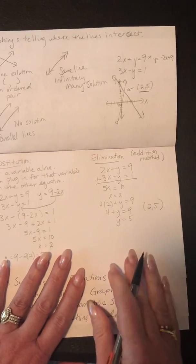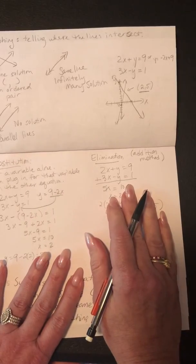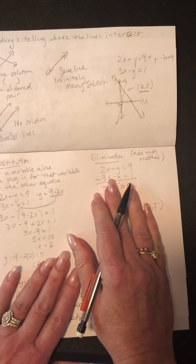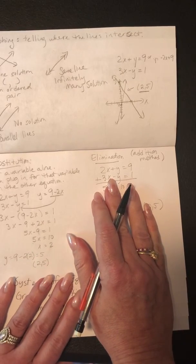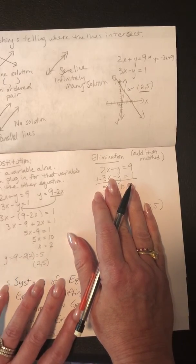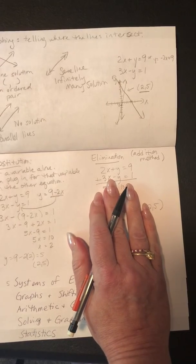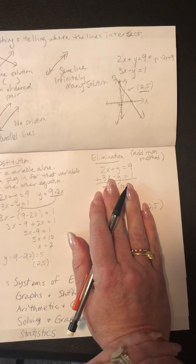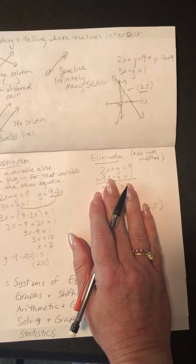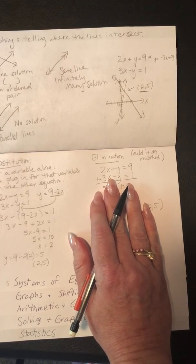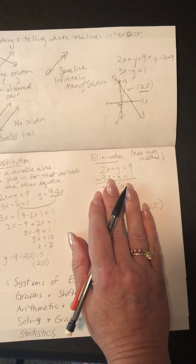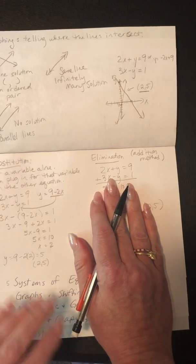Don't forget: whenever you're using substitution or elimination, if when you add the two equations everything cancels out and you end up with 0 equals 0, that's when you have infinitely many solutions. If the letters disappear but the numbers don't equal each other — like you end up with 5 equals 9 — then that's a no solution.